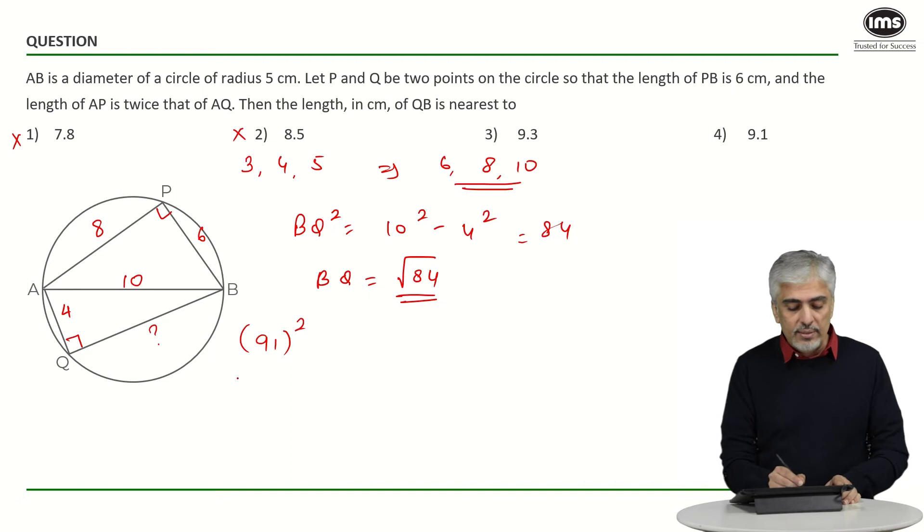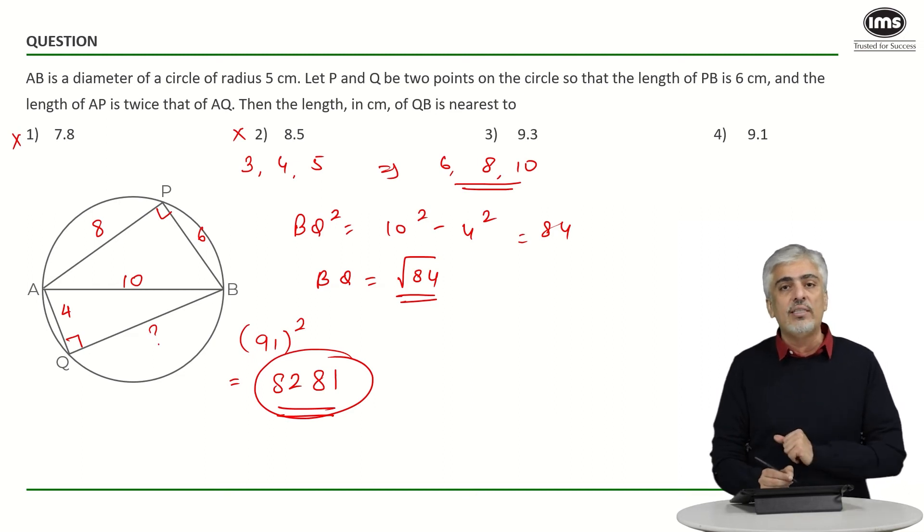What is 91 square? One comes down as it is. What is double of 9? Double of 9 is 18 and we have a 1 carry over. And what is square of 9? 81. 81 plus 1 is 82. Works for all digits ending with 1, all 2-digit numbers ending with 1. 8281.